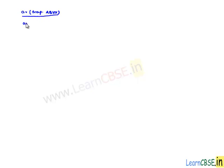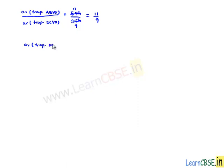Now, area of trapezium ABYX divided by area of trapezium DCYX equals 55H divided by 45H, which simplifies to 11 by 9. Therefore, cross multiplying, we get area of trapezium DCYX is equal to 9 by 11 times area of trapezium ABYX. This is the third proof as required.